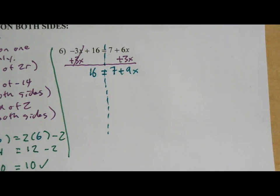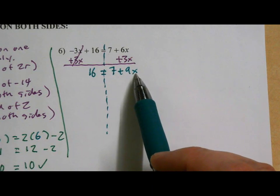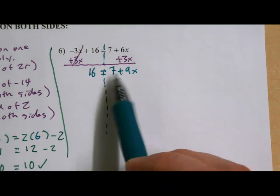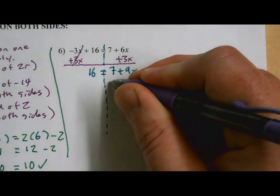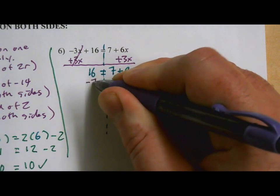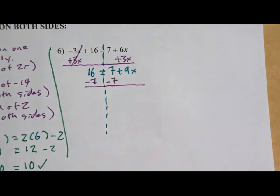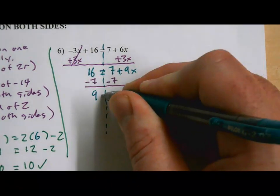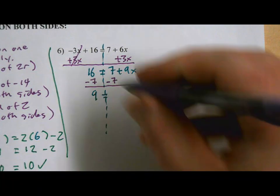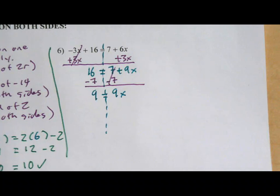And now we only have an x on one side of our equation, so we can start solving. So let's work to get this x by itself. I need to get rid of this 7 and this 9. Let's take care of addition, subtraction first. That's a positive 7, so I'm going to do minus 7 on both sides. So what's left over? 16 minus 7 is 9. 7 minus 7. Those cancel and go away. 9x left over here.